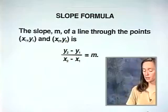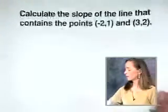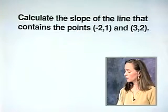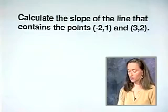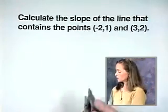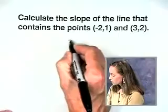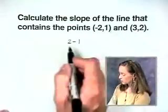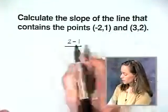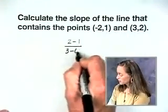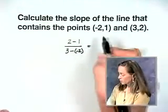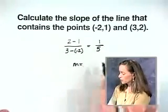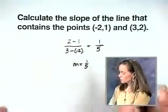Let's try this out with an example. What we want to do is calculate the slope of the line that contains the points negative 2, 1, and 3, 2. Using the formula, we're going to subtract the y values. In this case, I choose to do 2 minus 1 over the difference in the x values, 3 minus negative 2. Simplifying, I get 1 over 5. The slope of the line that contains these two points is 1 fifth.